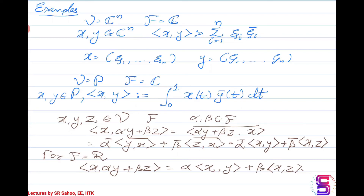If the field is real, then conjugate symmetry is essentially just symmetry — there is no conjugation involved. If the field is real, you also have linearity in the second argument. If the field is complex, you need to be careful, as standard linearity does not hold in the second argument.